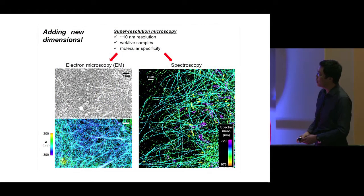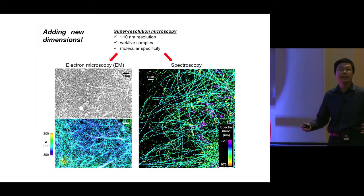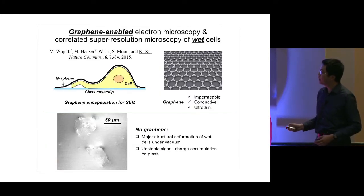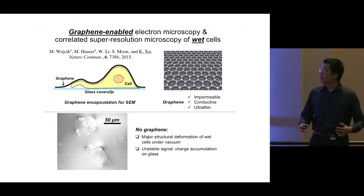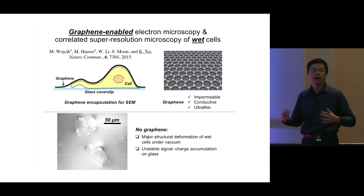In one direction we are combining super-resolution microscopy with electron microscopy by developing a new method to enable electron microscopy of wet cells. In a second direction we are combining super-resolution microscopy with spectroscopy to turn a black-and-white super-resolution image into a fully spectrally resolved image — a true-color super-resolution microscopy. Let's begin with the first part, which we call graphene-enabled electron microscopy and color-correlated super-resolution microscopy of wet cells.